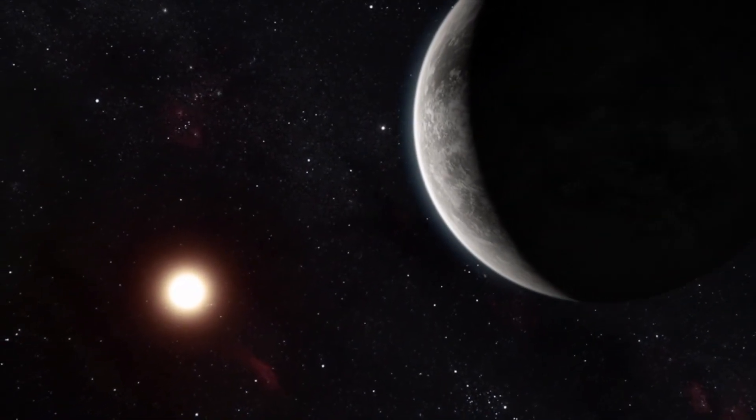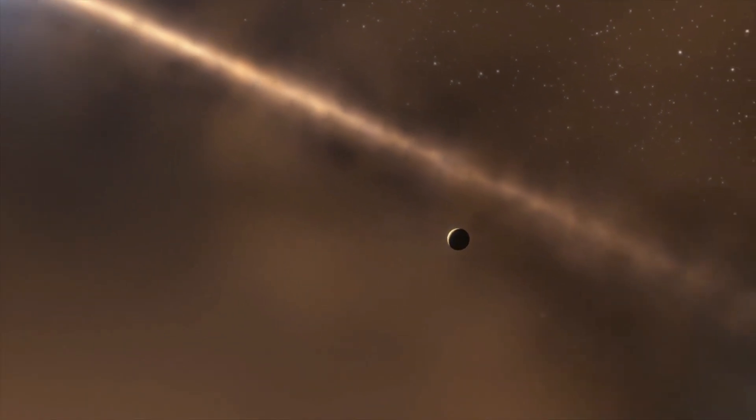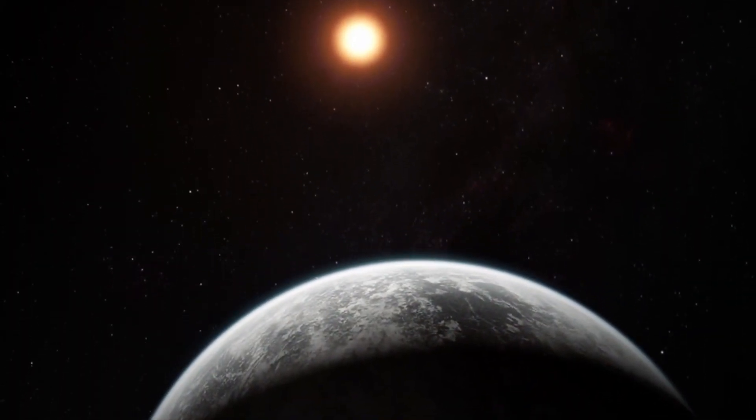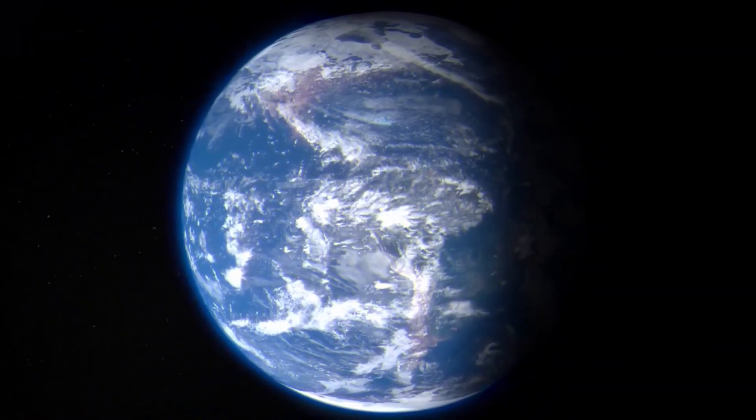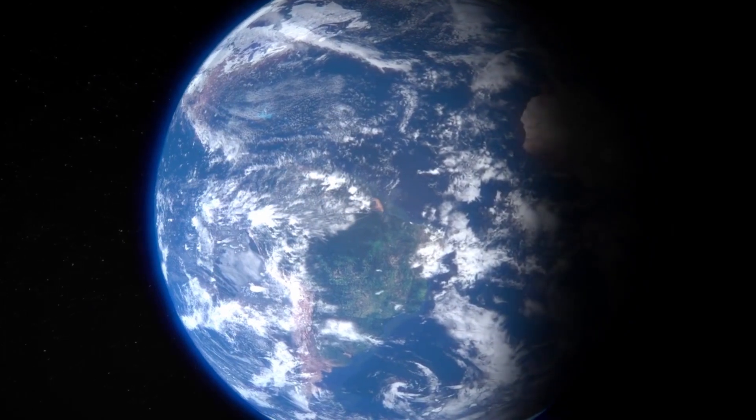Proxima b is much smaller and dimmer than the Sun, which makes the habitable zone much closer to the star. Proxima b orbits at a distance of approximately 4.5 million kilometers from the star, which means its orbital period is about 11.2 Earth days.